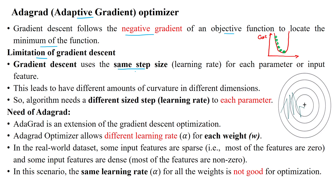Gradient descent uses the same step size for the learning rate whenever we are updating the parameters for the given input features. In this cost function, gradient descent uses the same alpha value for all epochs or iterations, which creates an issue — we need different amounts of curvature in different dimensions. This is the stochastic gradient learning curve, which takes many oscillations of different magnitudes to reach the convergence point.